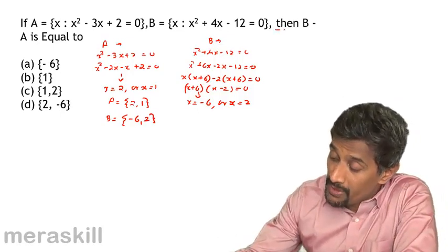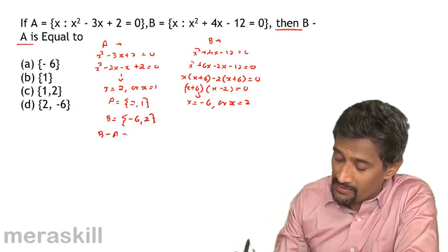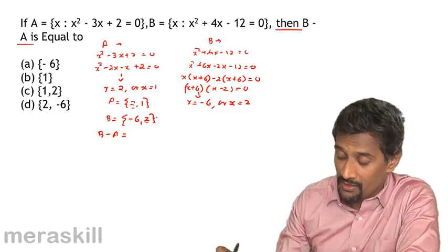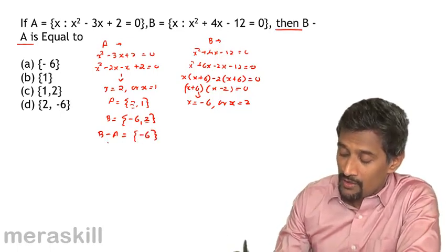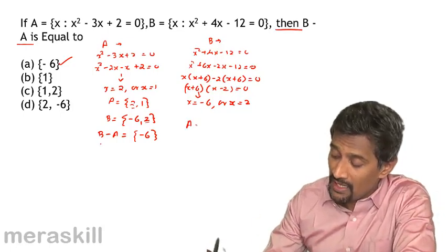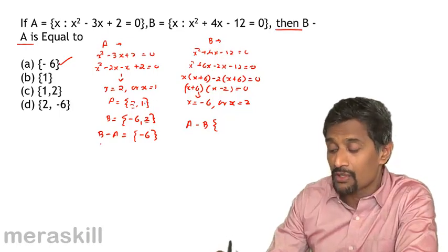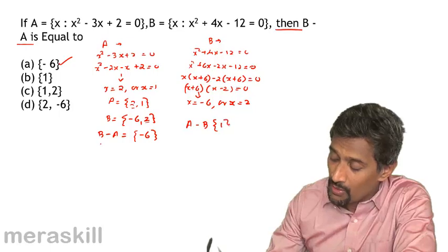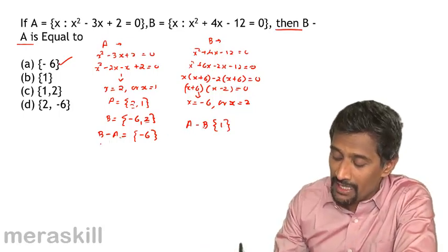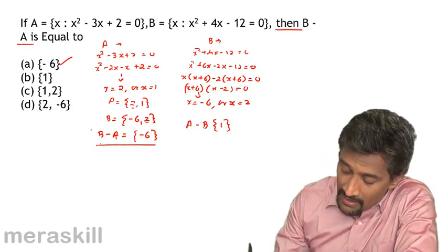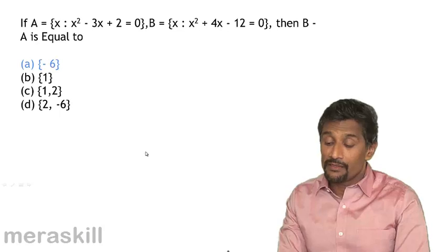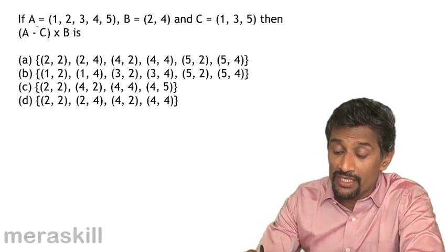Now B minus A means elements in B not present in A. Since 2 is in both sets, it is excluded. The remaining element in B is −6, so B minus A = {−6}. For reference, A minus B would be {1}, as 1 is in A but not in B. The answer to the question is B minus A = {−6}.